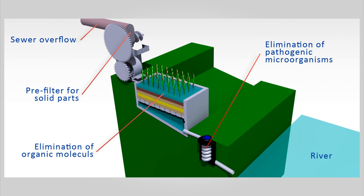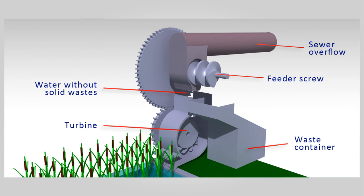Our system is composed of three parts which have three different goals. The sewage overflows come from the pipe into the mechanism.